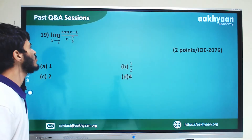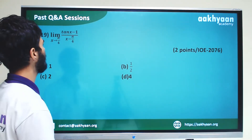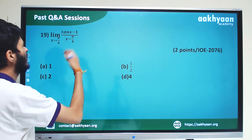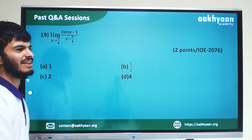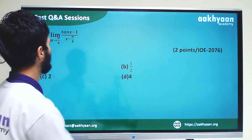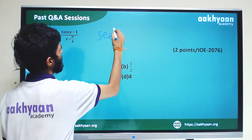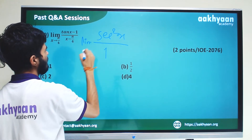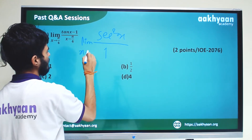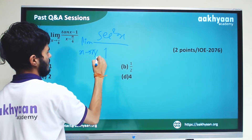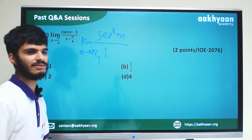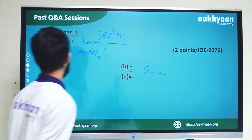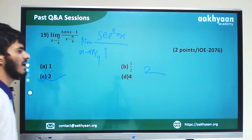In the next problem, limit x tends to pi by 4 of tan x minus 1 by x minus pi by 4. Substituting x equals pi by 4 gives 0 by 0 form. Using L'Hôpital's rule, the derivative of tan x is sec squared x, divided by 1. So limit x tends to pi by 4 gives sec squared pi by 4, which equals root 2 whole squared, equal to 2. So these are correct.